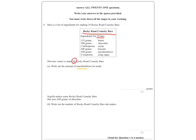Now we're interested in marshmallows, so you need 100 grams of marshmallows, and you need to divide that by 24. That's how much marshmallow we need for one Rocky Road Crunchy Bar.